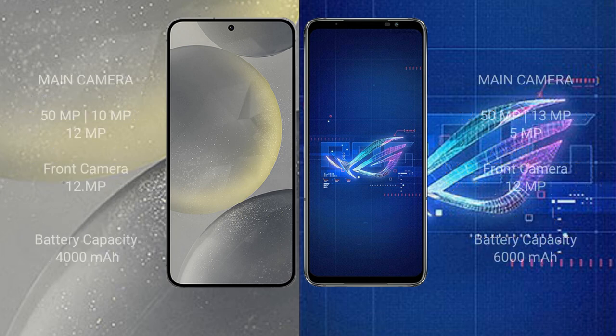The Samsung Galaxy S24 features a triple camera setup: 50MP plus 12MP plus 10MP, and a 12MP front camera. The ASUS ROG Phone 6 features a triple camera setup: 50MP plus 13MP plus 5MP, and a 12MP front camera. The Samsung Galaxy S24 has a 4000mAh battery with 25-watt fast charging support.